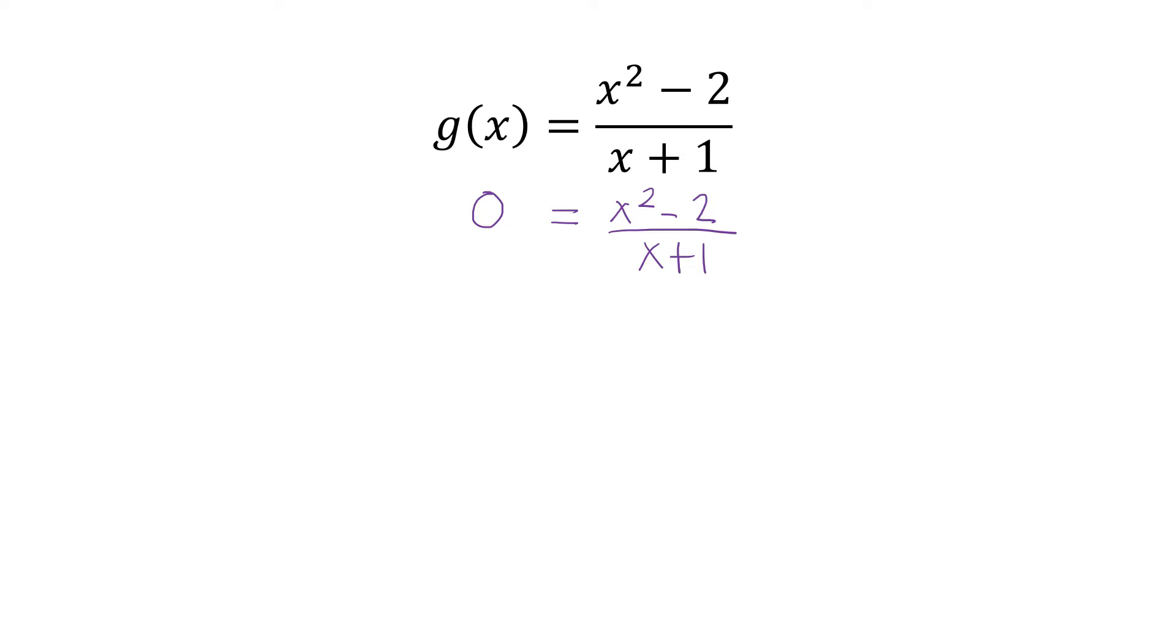we know that we have 1 here. By cross multiplication, that is 0 times (x + 1) is 0, and then 1 times (x² - 2) is x² - 2.